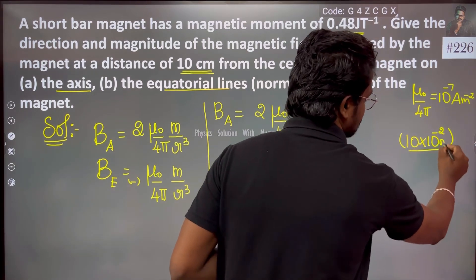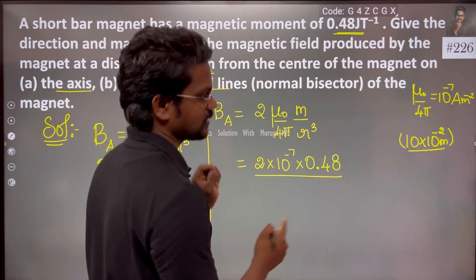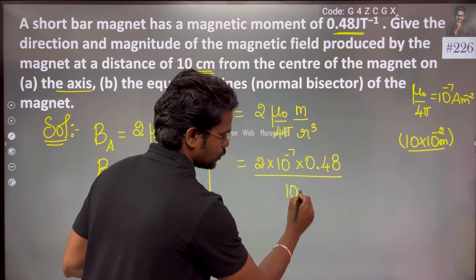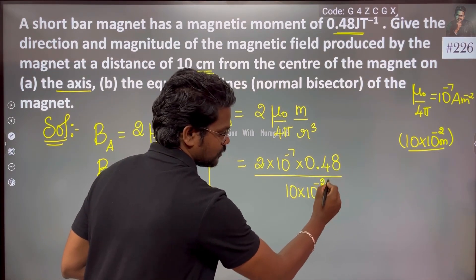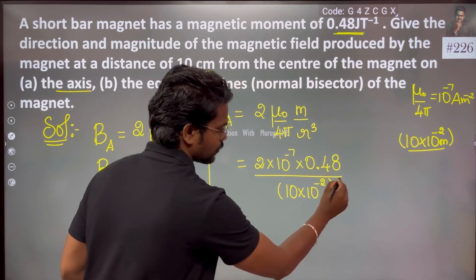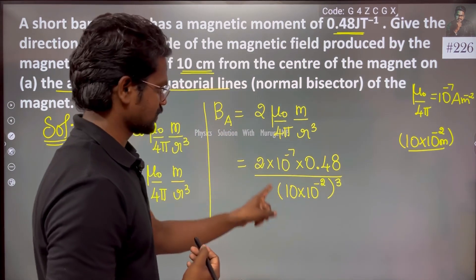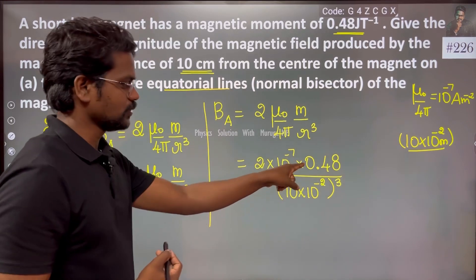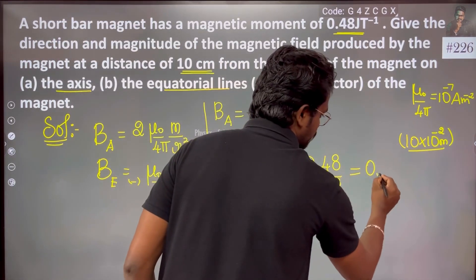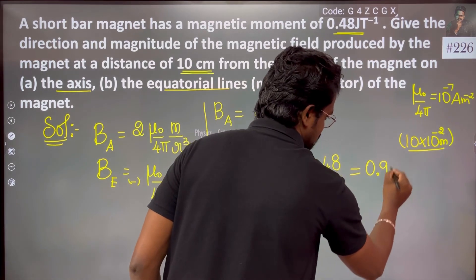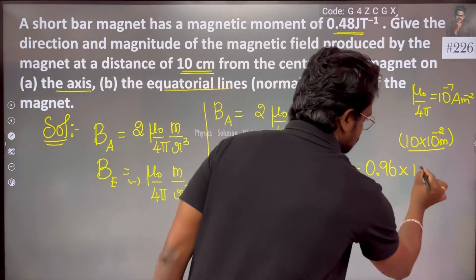So r is 10 × 10⁻² meters. This is then cubed. Then 2 × 0.48 gives 0.96, multiplied by 10 to the power minus 7, whole divided by 10 cubed.